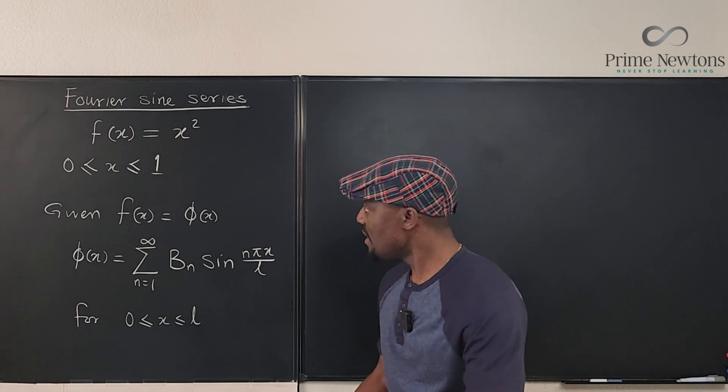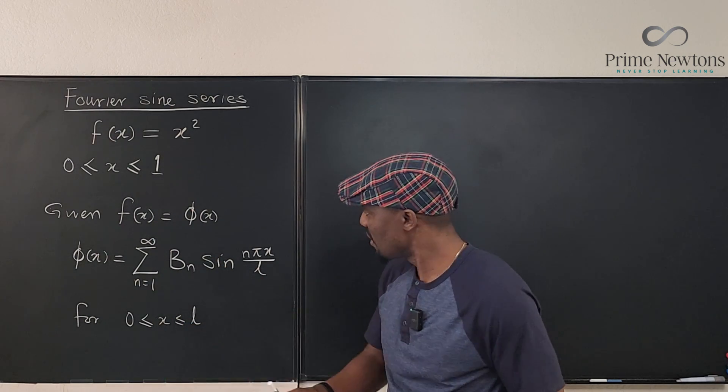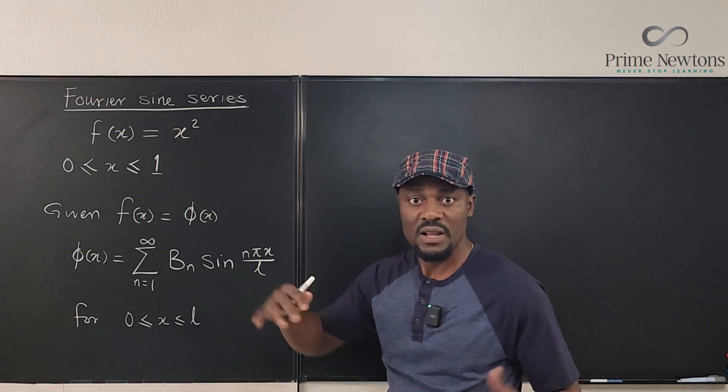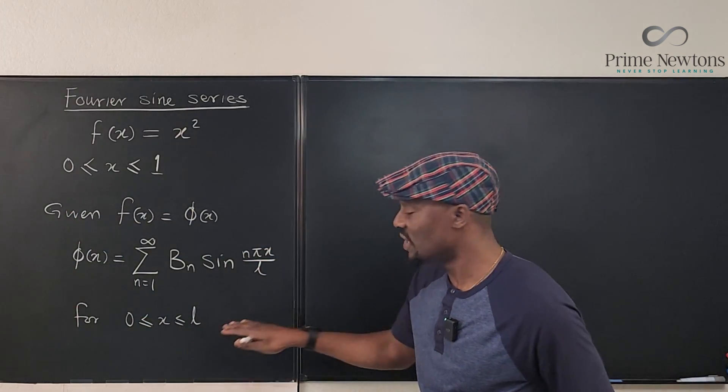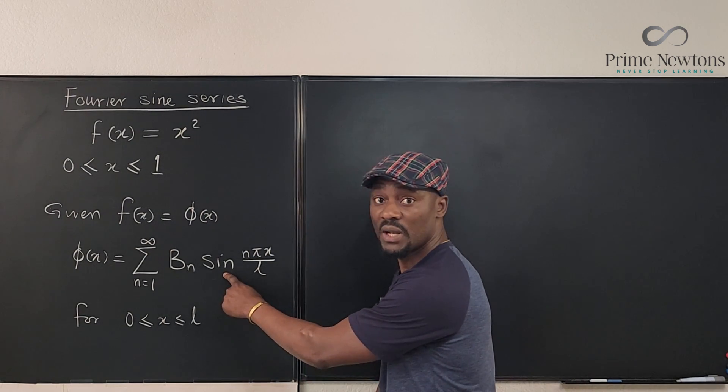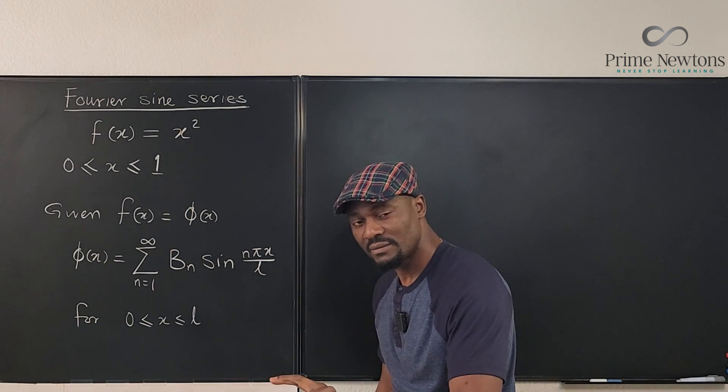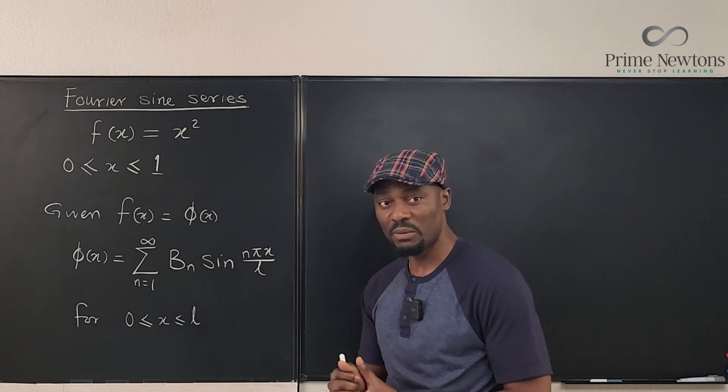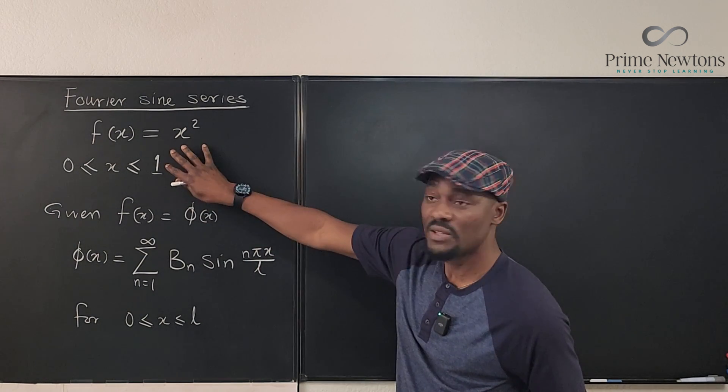You can see for the example that I'm dealing with, the value of l is 1, so it's not going to cause any trouble for us. We know that our phi(x) is x squared. In order to use this, this is how you find the general Fourier sine series for any function. You must know this formula, and you must know that the interval is from 0 to l. Now let's try to answer this question.